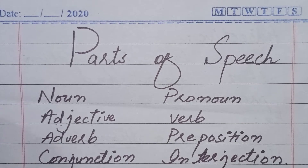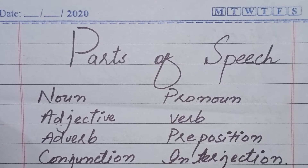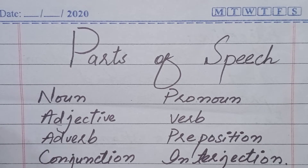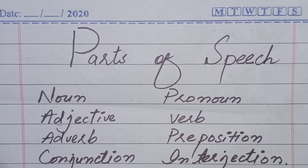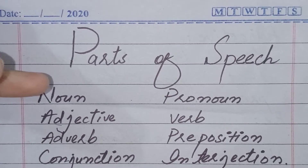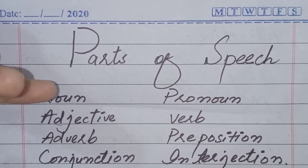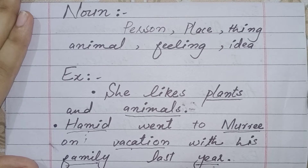First of all, whatever we talk is called speech, and speech consists of parts or words. Words are divided into classes according to their grammar, and these are called parts of speech. There are eight parts of speech, and if we include the article then they will be nine: noun, pronoun, adjective, verb, adverb, preposition, conjunction, and interjection.